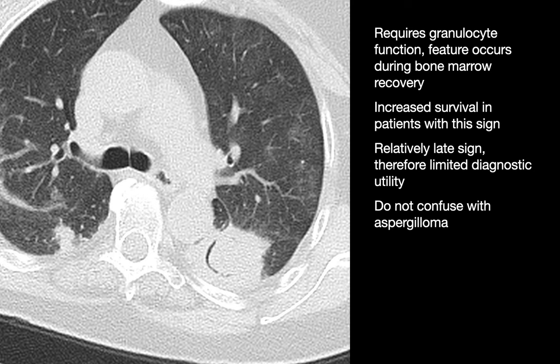This is a classic sign referred to as the golden S sign. In these cases, you see a central mass that forms the inferior part of the S. That central mass is often a large bronchogenic cancer causing obstruction of the right upper lobe airways. The more superior aspect of the S corresponds to the minor fissure, with an opacified right upper lobe on one side and lucent lung on the other.